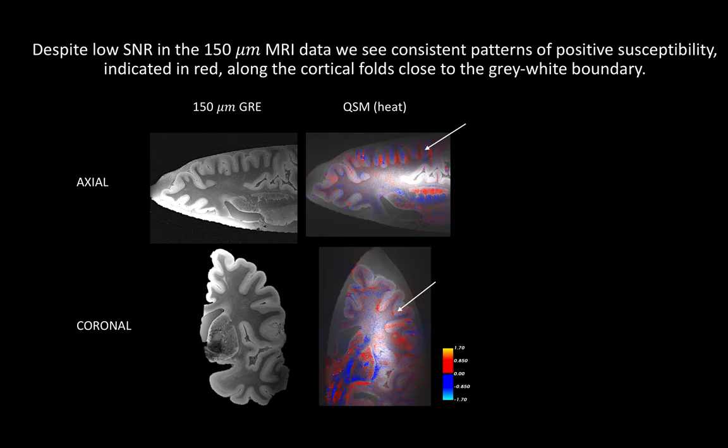This slide shows the results of QSM at 150 micron for the same hemisphere. Data is presented with the RMS image calculated across all four echoes of the 150 micron MRI data to the left and the QSM calculation overlaid as a heat map on the right. Again we see consistent patterns of positive susceptibility, indicated in red, along the folds of cortex close to the grey-white boundary. This is synergistic with the 500 micron result despite the low SNR setting.